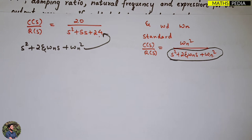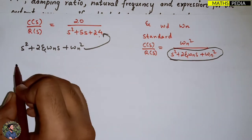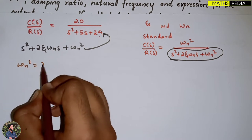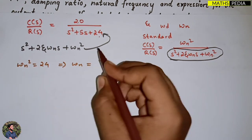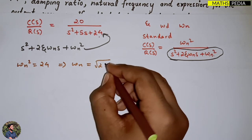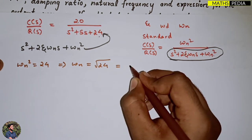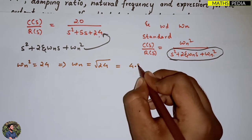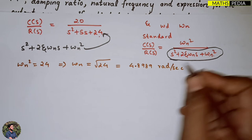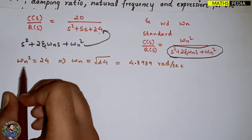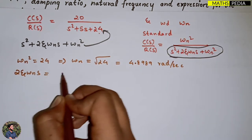Comparing denominators: ωn² equals 24, so ωn equals the square root of 24, which is approximately 4.8989 radians per second. The unit is very important here. This is the natural frequency.